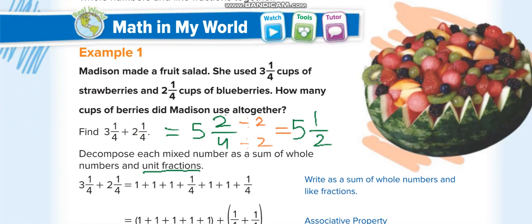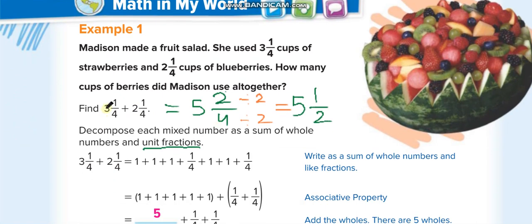To add mixed numbers first of all we add the whole numbers. This is three whole one over four plus two whole one over four. So first we add the whole numbers, three plus two equals five. Then we add the fractions, one over four plus one over four equals two over four. We only add the numerators when adding fractions and the denominator stays same.